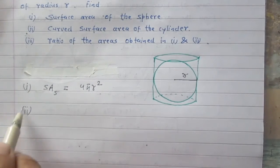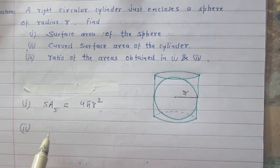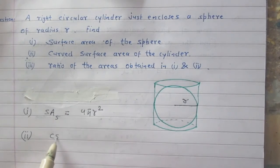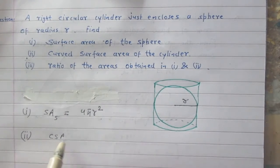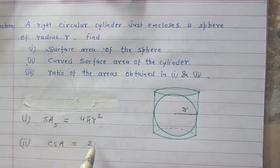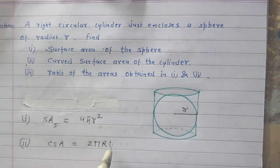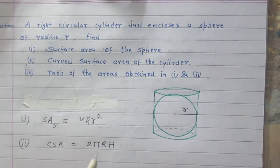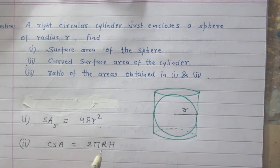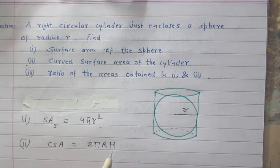In part 2, we are asked to find the curved surface area of the cylinder. Curved surface area of the cylinder is 2πRH, where R stands for the radius of the cylinder and H stands for the height of the cylinder.